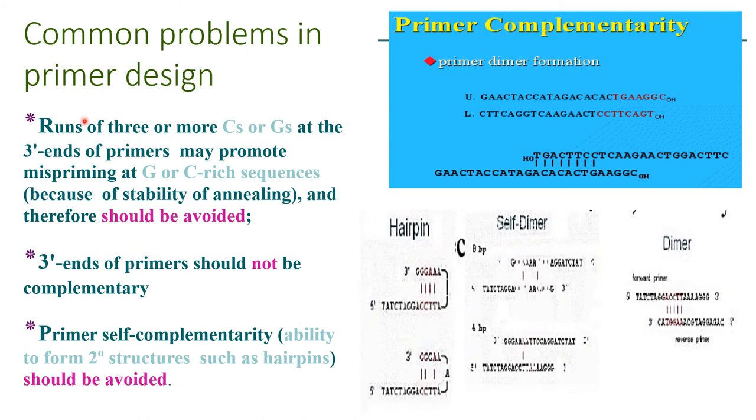Now what are the common problems in primer designing? Runs of three or more cytosine or guanosine at the 3 prime end of the primer may promote mispriming at G or C rich sequences because of the stability of annealing, and therefore it should be avoided.